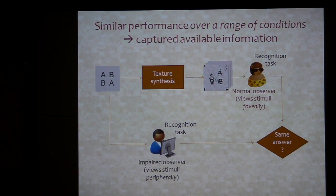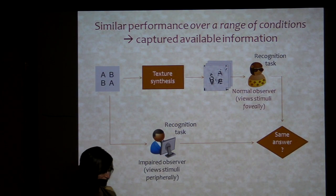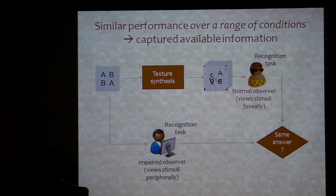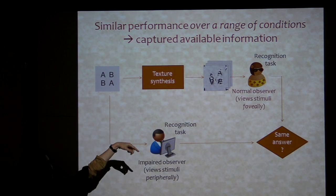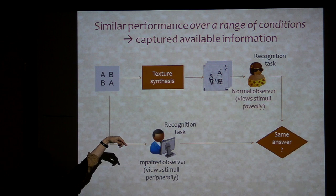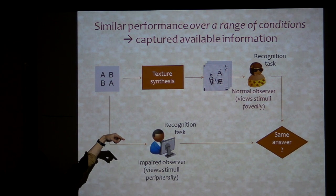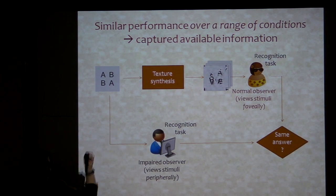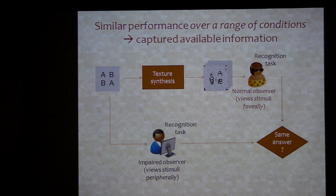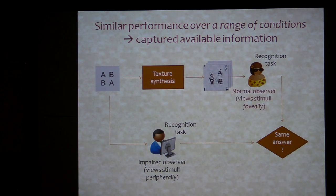The idea is that if over a range of conditions, performance from doing the peripheral task is similar to the performance you get operating on the summary statistics, then that argues that you've captured something about the information available to the visual system.